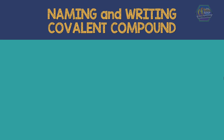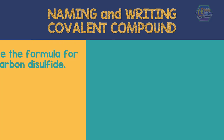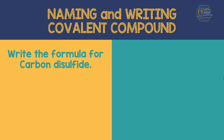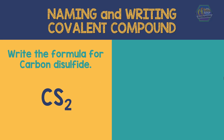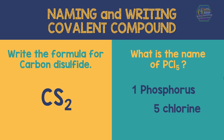Let us try naming and writing formulas for covalent compounds. Write the formula for carbon disulfide: there is one carbon and the prefix 'di' means two sulfur, giving us CS2. Next, what is the name of the compound with one phosphorus and five chlorine? The name is phosphorus pentachloride, PCl5.